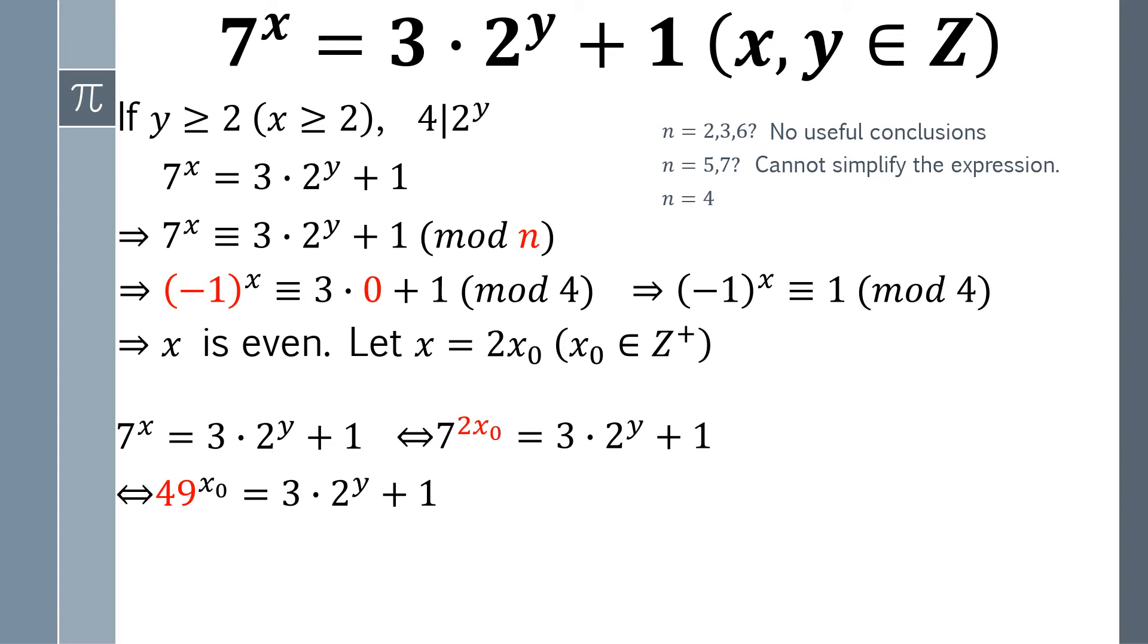This time, we choose 5 as a modulus here, because we consider that 49 is congruent with minus 1 modulo 5, which will be useful for us.